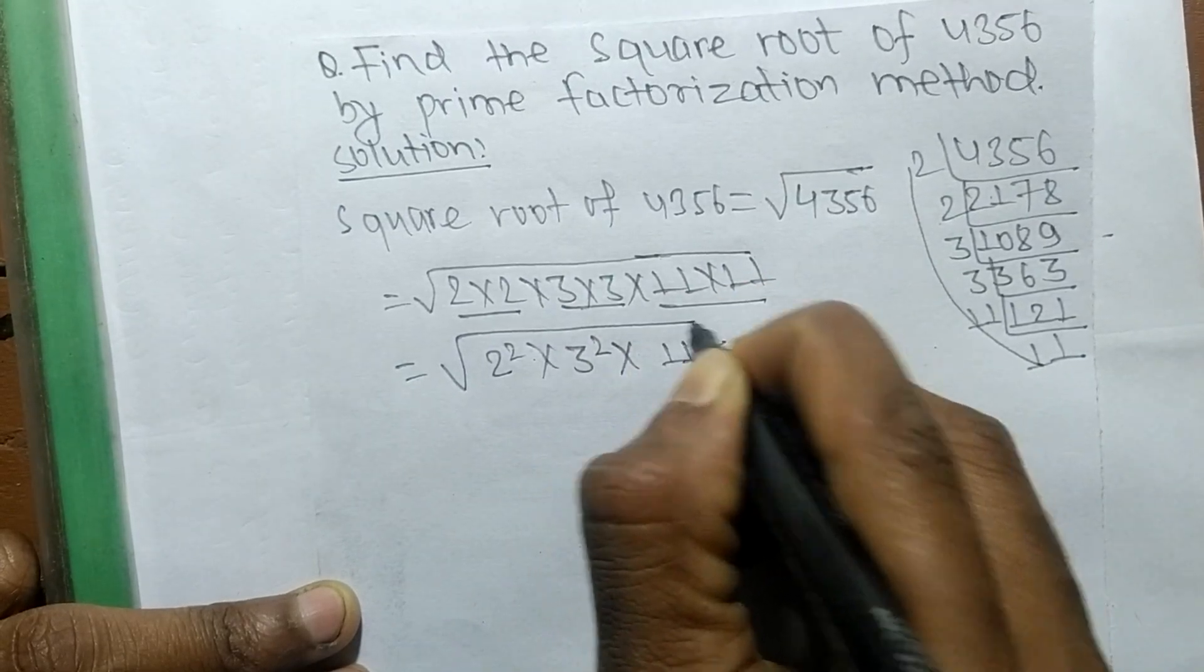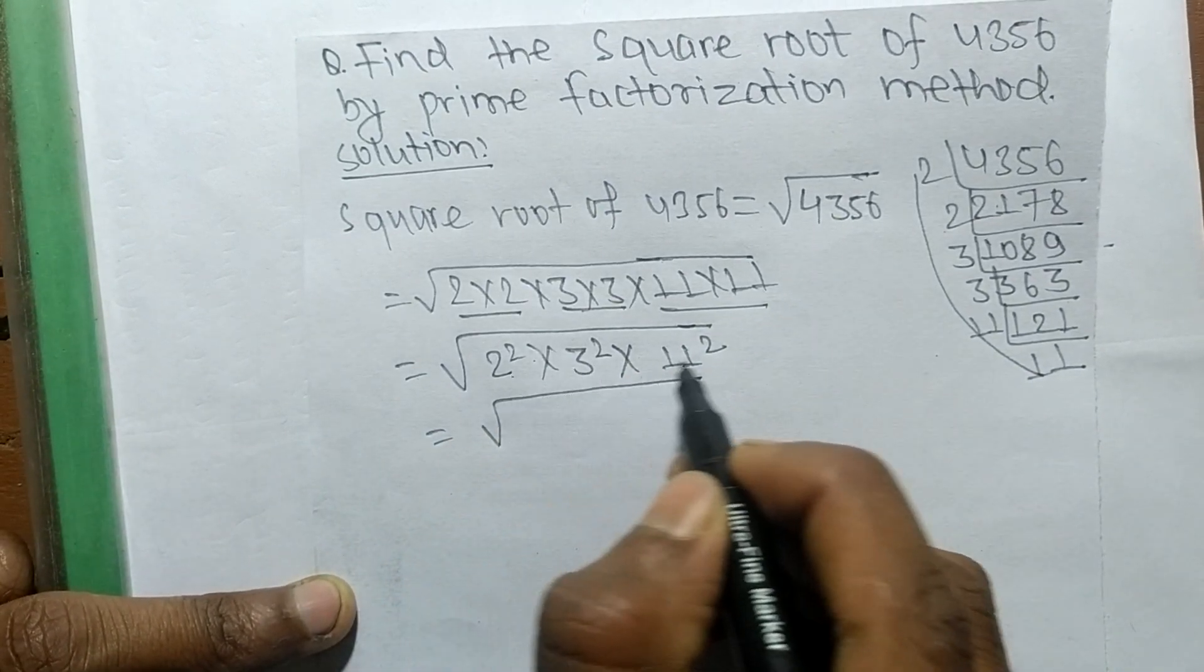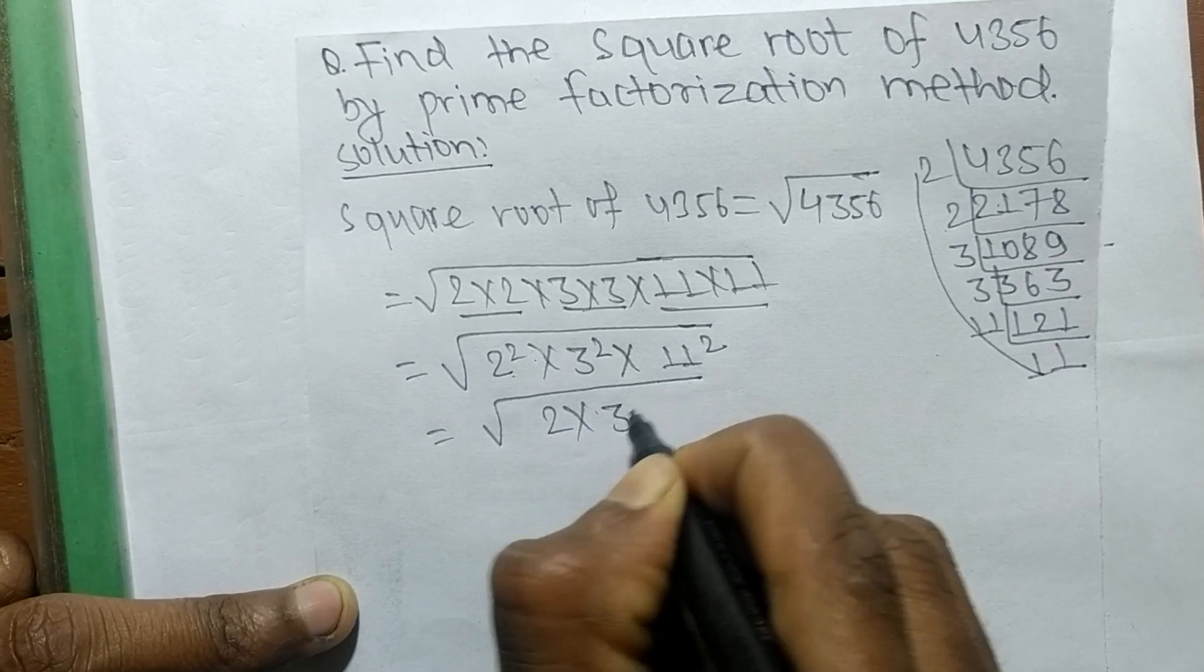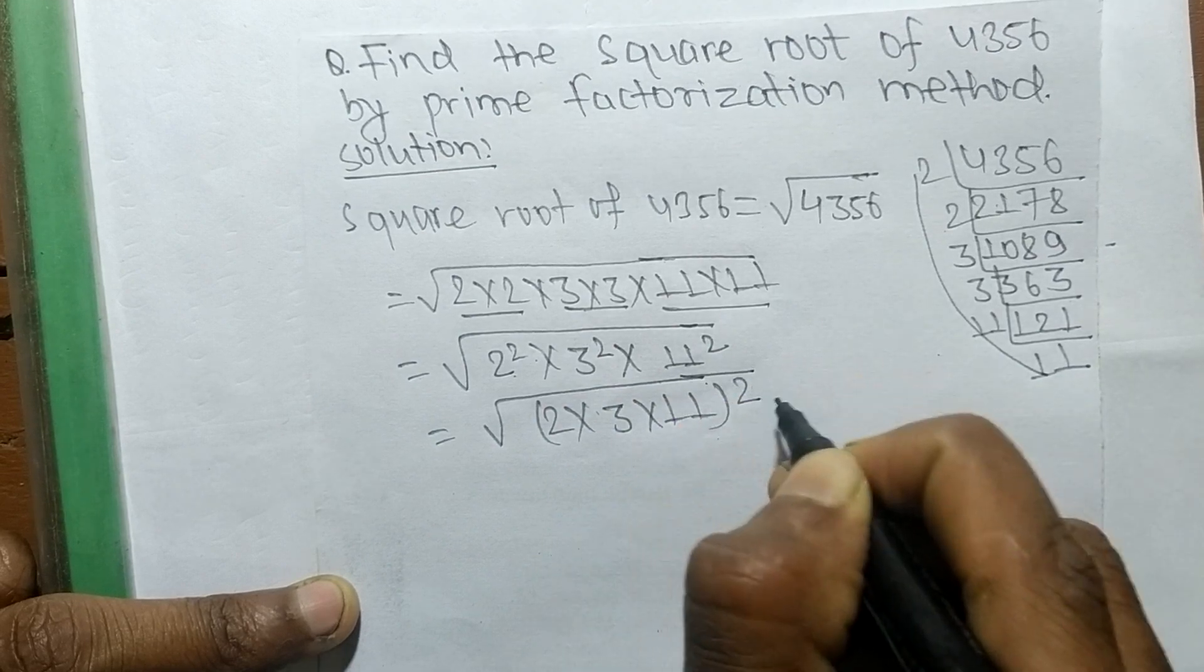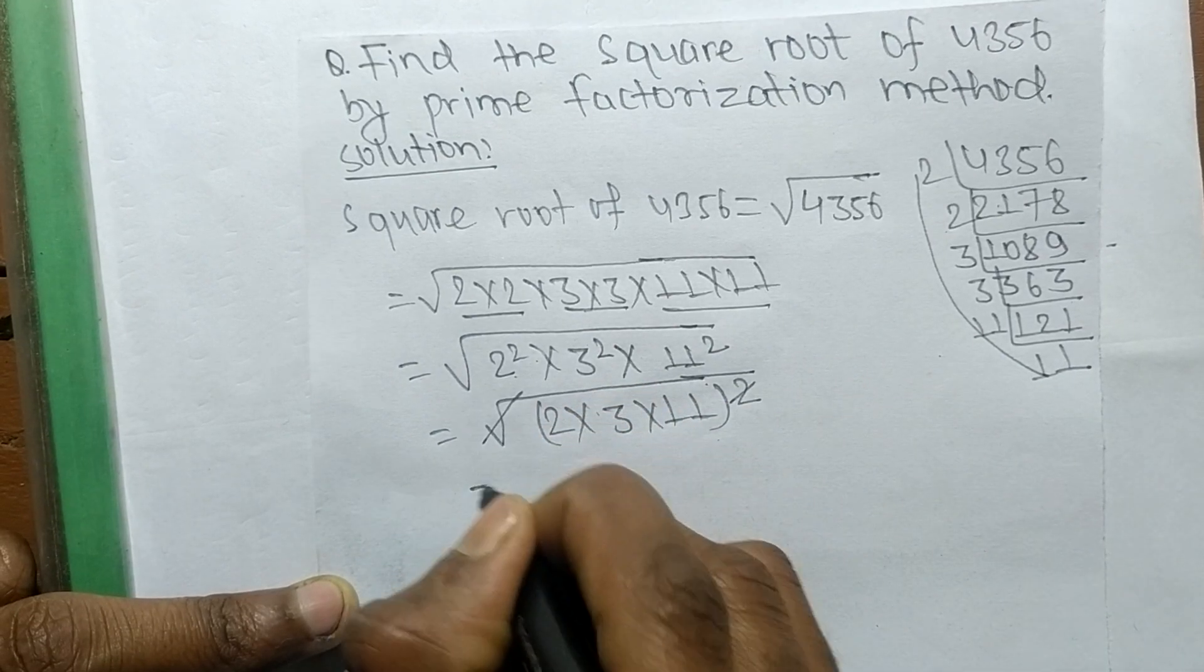As you can see, a square is present in all these numbers, so we can write it as 2 into 3 into 11, whole squared. A square and a square root will cancel each other.